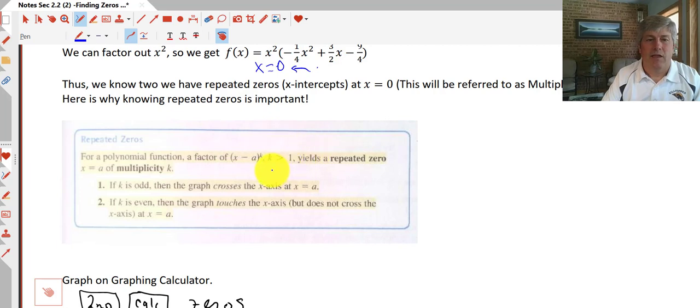Multiplicity says if we have an odd number of zeros, so if a zero is repeated one or three or even five times, et cetera, if we have an odd number of zeros, our graph is going to cross at that location. It's going to cross the x-axis at that point. Whereas if our number of zeros is even, two, four, six, the graph of our function is going to bounce off of that point or off of that x-intercept.